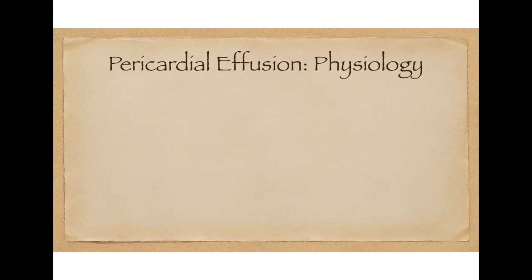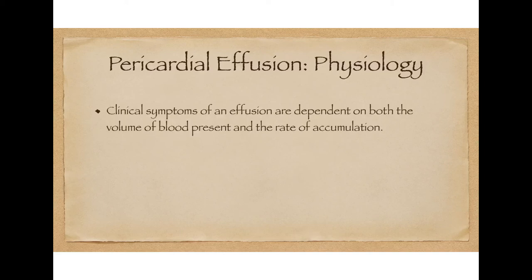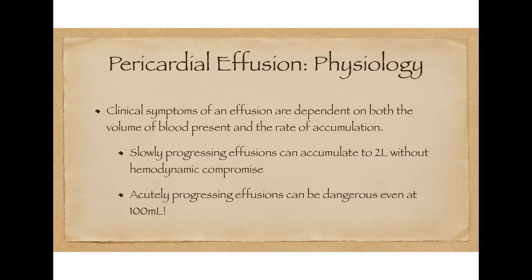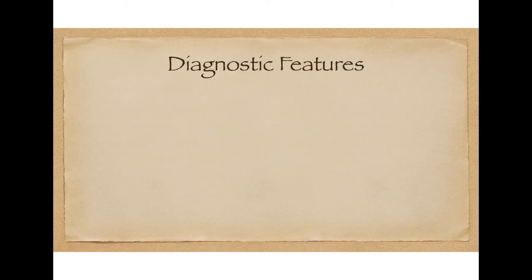Although the size of the pericardial effusion might seem significant, that doesn't always translate into severe clinical symptoms or hemodynamic instability. Not only is the amount of fluid important, it's also about how quickly that fluid accumulated. Clinical symptoms of any effusion are dependent on both the volume present and the rate of accumulation. Slowly progressing effusions can accumulate even up to 2 liters of fluid or blood inside the pericardium without causing any symptoms or hemodynamic compromise, whereas even 100 mL of fluid or blood can cause significant hemodynamic compromise if it develops acutely.